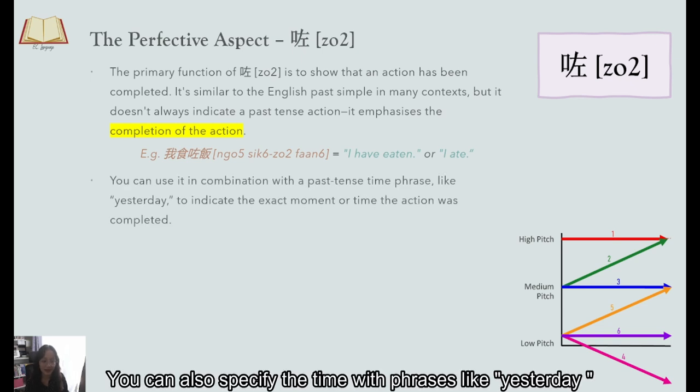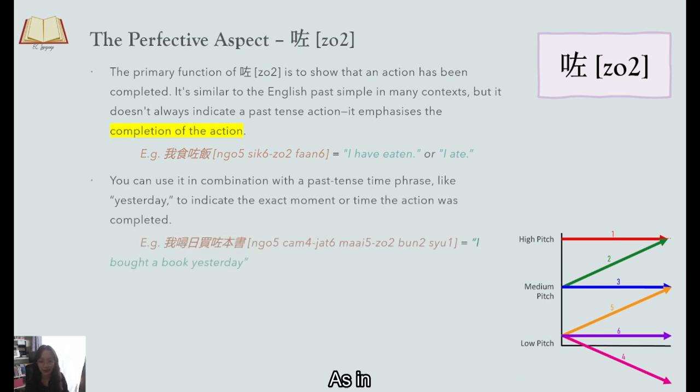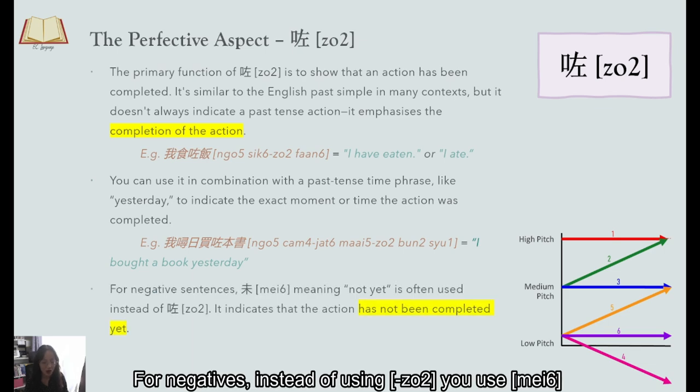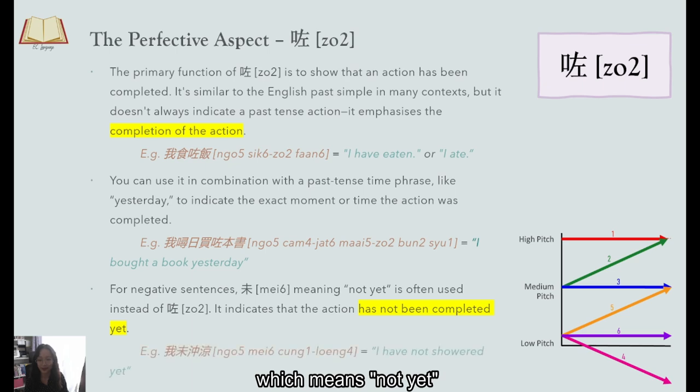You can also specify the time with phrases like yesterday as in 我昨日买左本书 I bought a book yesterday. For negatives instead of using 左 you use 未 to replace it which means not yet like 我未冲凉 I have not showered yet.